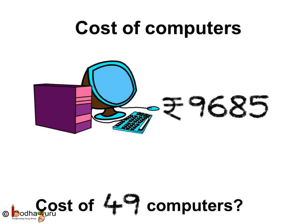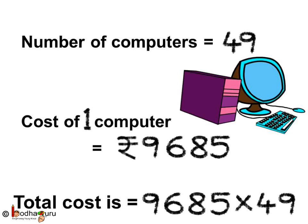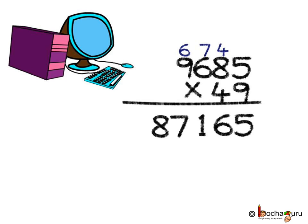Let us solve another problem now. If the cost of 1 computer is 9,685 rupees, find the cost of 49 such computers. As we know, the number of computers is 49 and the cost of 1 computer is 9,685 rupees. So the cost of 49 computers is equal to 9,685 multiplied by 49. Let us multiply 9,685 by 49.